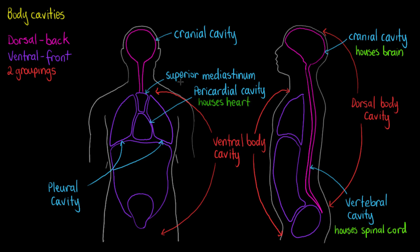The sternum is our flat bone on the front of the superior mediastinum. It protects the trachea and esophagus, but also protects our aorta, which is the largest artery in the body. And our lungs are housed in the pleural cavities.